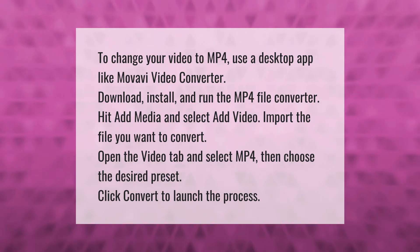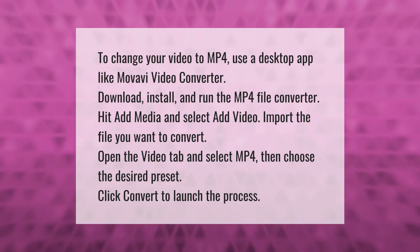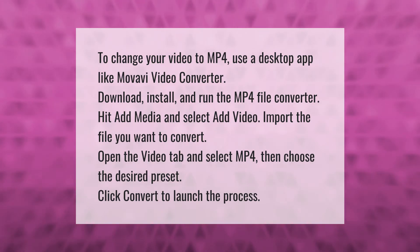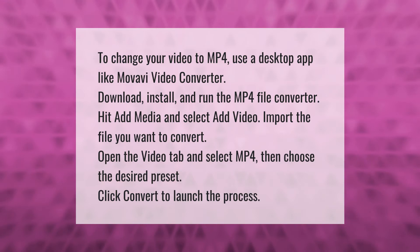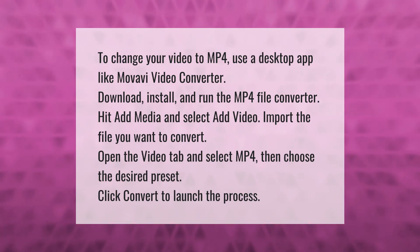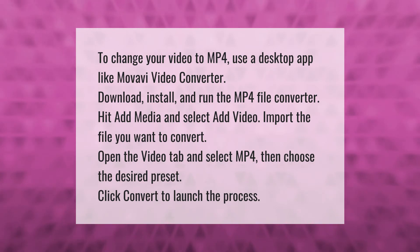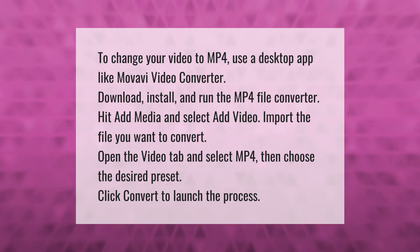To change your video to MP4, use a desktop app like Movavi Video Converter. Download, install, and run the MP4 file converter. Hit Add Media and select Add Video to import the file you want to convert. Open the Video tab, select MP4, then choose the desired preset and click Convert to launch the process.